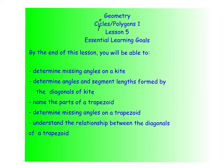Objectives for this lesson: determine missing angles in kites; determine angles and segment lengths formed by the diagonals of a kite; name parts of trapezoids; determine missing angles and some relationships with diagonals within trapezoids. Let's go ahead and get started.